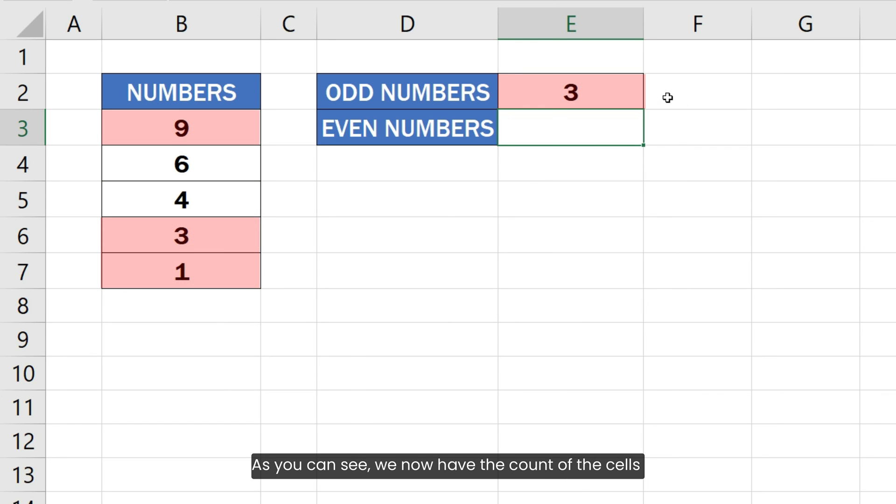As you can see, we now have the count of the cells having odd numbers in the given range.